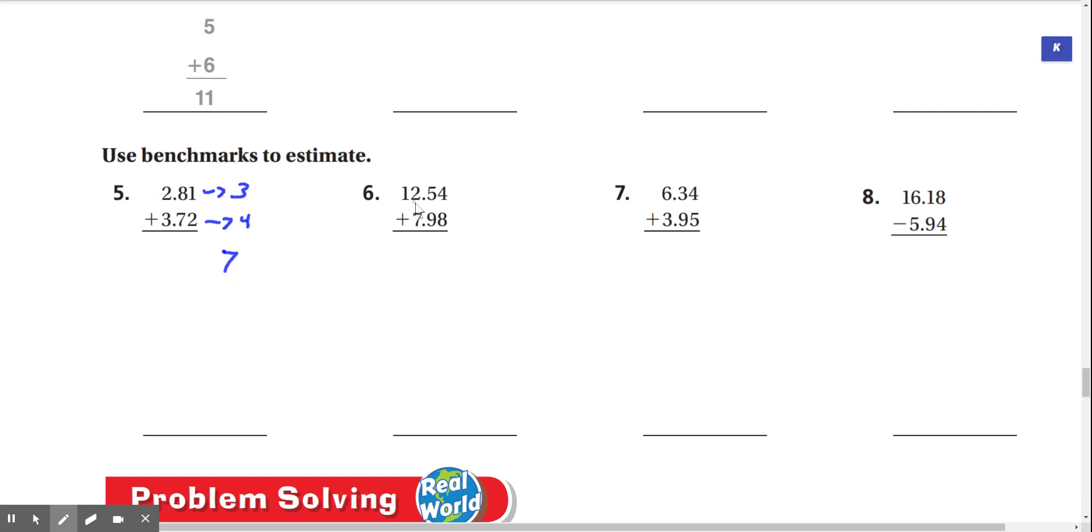Number six, 12.54 plus 7.98. When we look at a number line, 12.54 is really close to 13, and 7.98 is also really close to 8. And so we have 13 plus 8. Well, 8 plus 3 is 11. Carry the 1, and 1 plus 1 is 2. So our answer is 21.